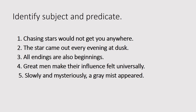Can you identify the subject and predicate in the following sentences? Number one: 'Chasing stars' is the subject, 'would not get you anywhere' is the predicate. Number two: 'The star' is the subject, 'came out every evening at dusk' is the predicate. Number three: 'All endings' is the subject, 'are also beginnings' is the predicate. Number four: 'Great men' is the subject, 'make their influence felt universally' is the predicate. Number five: 'A gray mist' is the subject, 'appeared' is the predicate — 'slowly and mysteriously' is an adverbial modifier.